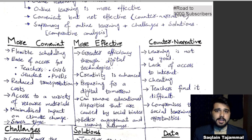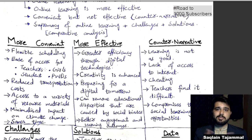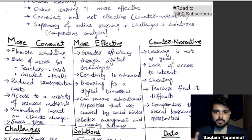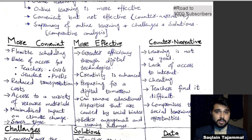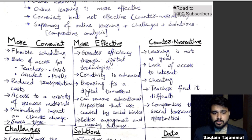Fifth, access to a variety of resource materials — with traditional education you only have your books, but with online education you have online sources. Your teacher can share materials via Zoom or Google Meet. Sixth, minimized impact on climate change — the climate impact is minimal with online education.